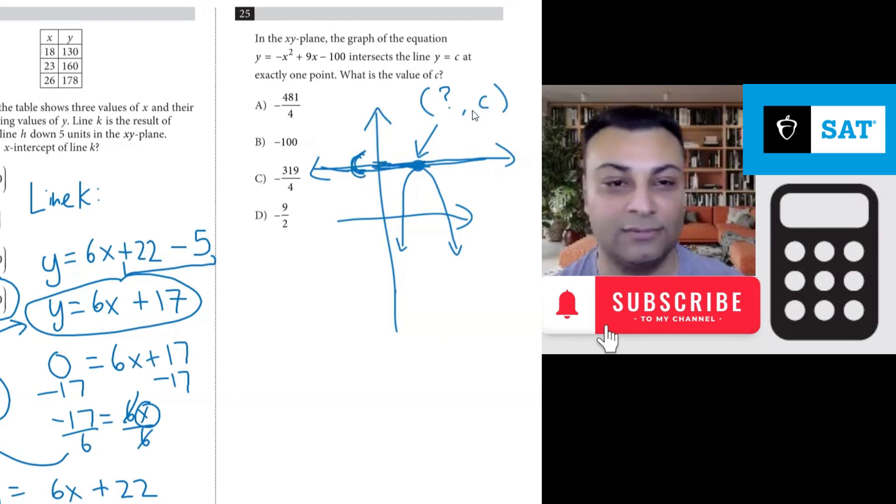Any coordinate on this line, any y coordinate on this line is c right. Even here the y coordinate is c and here the y coordinate is c. So this has some x coordinate that we don't know and then some y coordinate and they're asking us for what the value of this is.